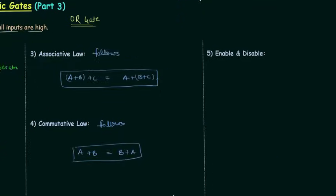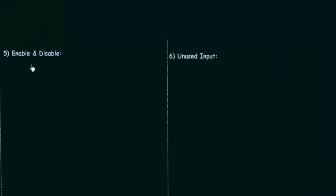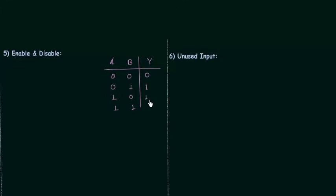Now we will discuss enable and disable for OR gate. To do this, we first make the truth table: inputs A and B give combinations 00, 01, 10, 11 with outputs 0, 1, 1, 1. For enable, you can see that 0 is acting as enable. When A equals 0, output is 0 when B is 0, and output is 1 when B is 1. So output is not fixed — 0 is enable for OR gate, and it is acting as a buffer because output Y equals B.